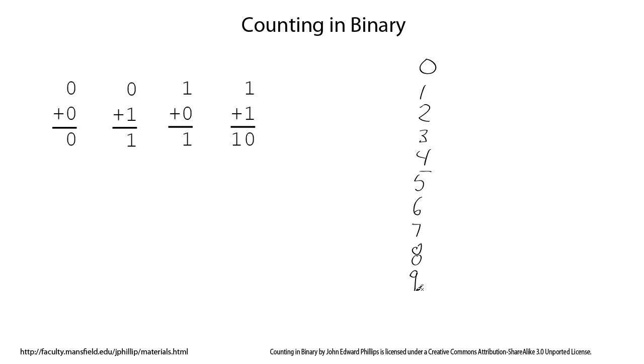When we get to 9, something special happens. We've used up all our symbols, 0 through 9, and the next thing we do then, to add 1 on to 9, we put down a 0 and carry a 1 to the next column. So we get the number 10.